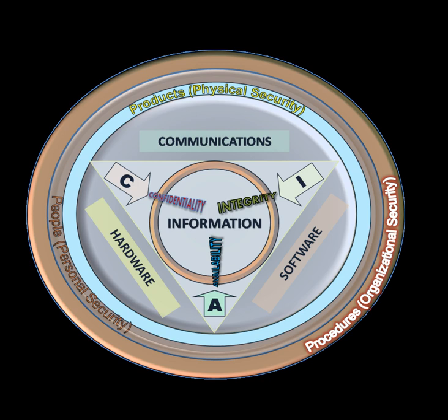Information security is a multidisciplinary area of study and professional activity concerned with the development and implementation of security mechanisms of all available types — technical, organizational — in order to keep information in all its locations within and outside the organization's perimeter, and consequently information systems where information is created, processed, stored, transmitted and destroyed, free from threats. The currently relevant set of security goals may include: confidentiality, integrity, availability, privacy, authenticity and trustworthiness, non-repudiation, and accountability and auditability (Cherdantseva and Hilton, 2013).